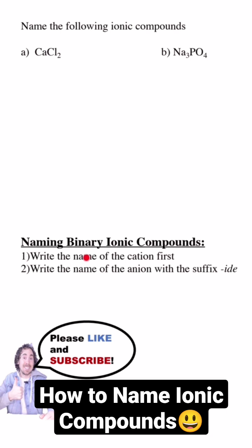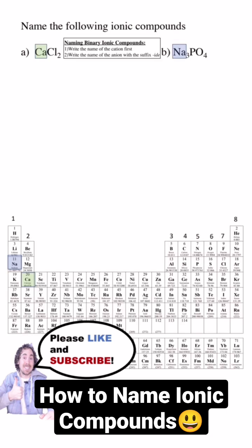When naming ionic compounds, the name of the cation comes first. Usually, the cation is a metal on the periodic table. In this case, calcium and sodium are both main group metals, and for main group metals we simply write the name as we find it on the periodic table.